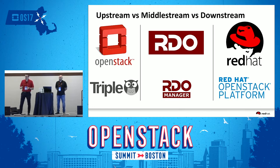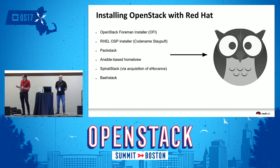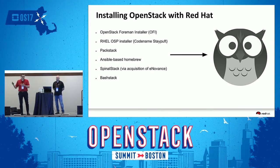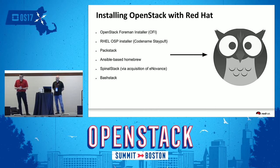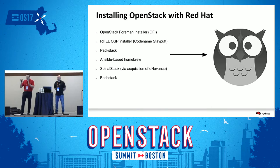Why did we pick Triple O to be the installer of choice? Contributing to all the services was very important to us. But prior to Triple O, we had six different installers in house. All people across the company would use different installers to deploy it — it was pretty messy. We decided Triple O is the way to go. We want to be good contributors upstream to all these projects, but we also want to make it as simple as possible for end users.